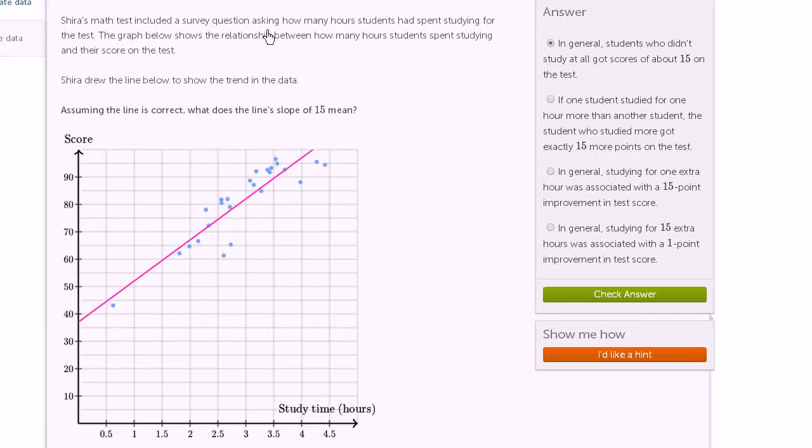Shira's math test included a survey question asking how many hours students had been studying for the test. The graph below shows the relationship between how many hours students spent studying and their score on the test. Shira drew the line below to show the trend in the data. Assuming the line is correct, what does the line slope of 15 mean?